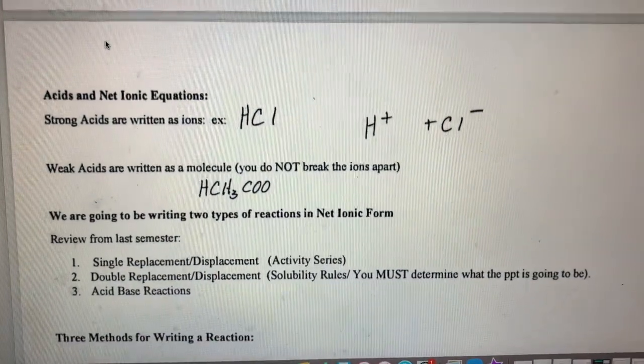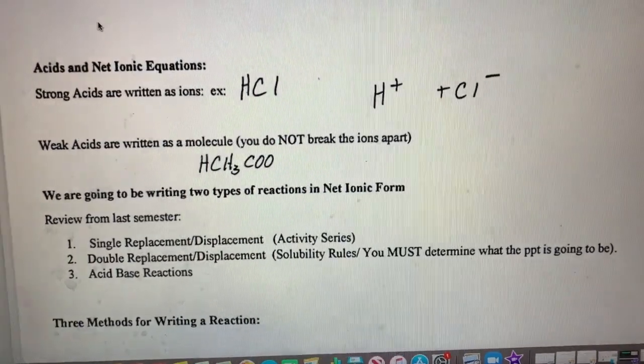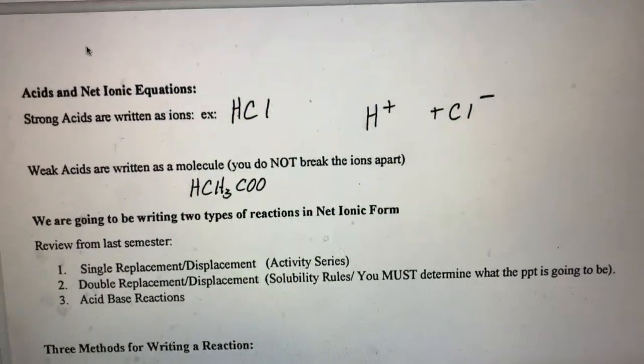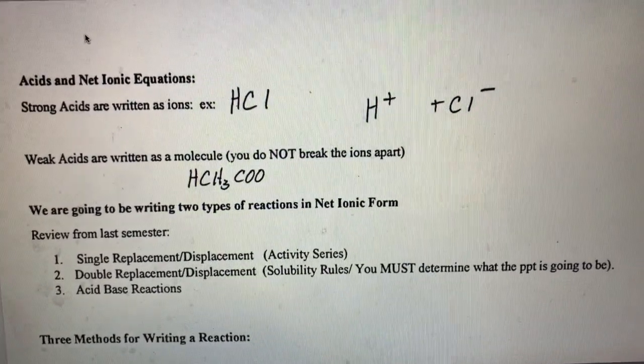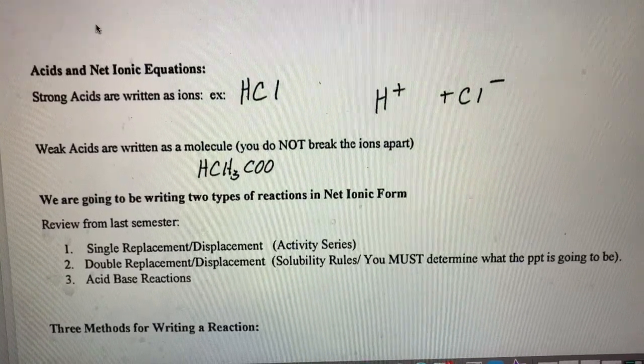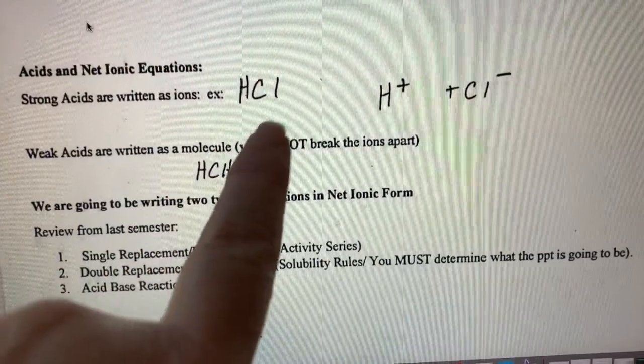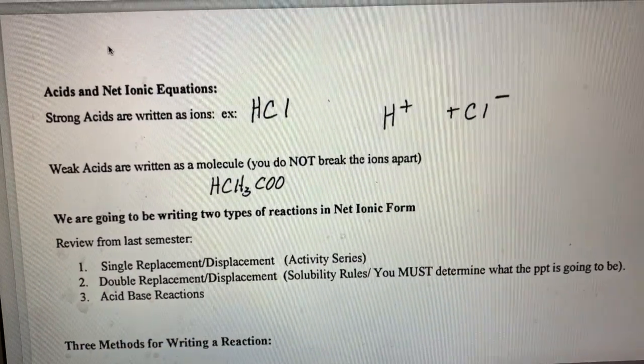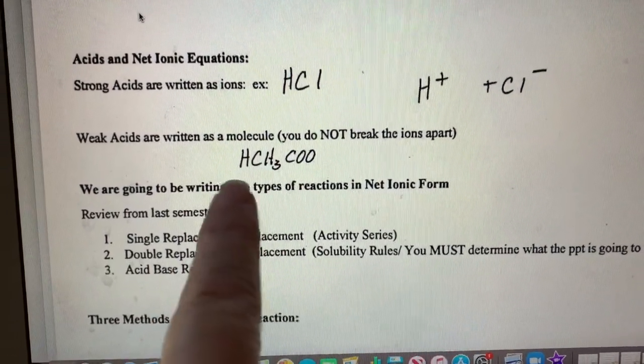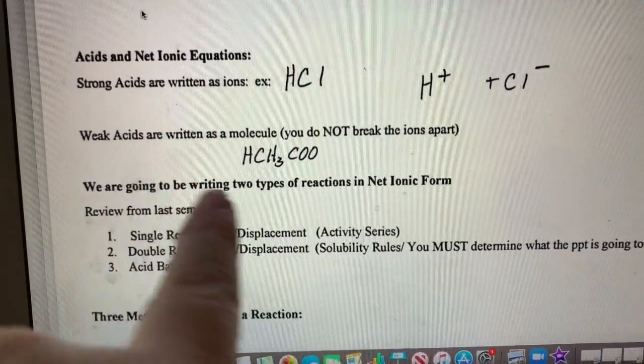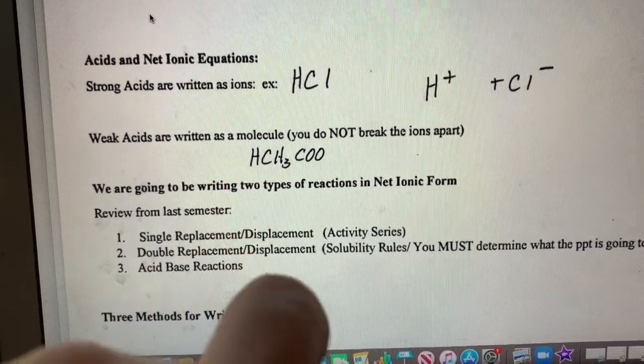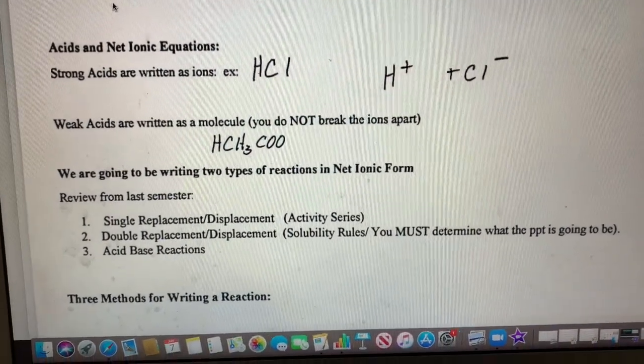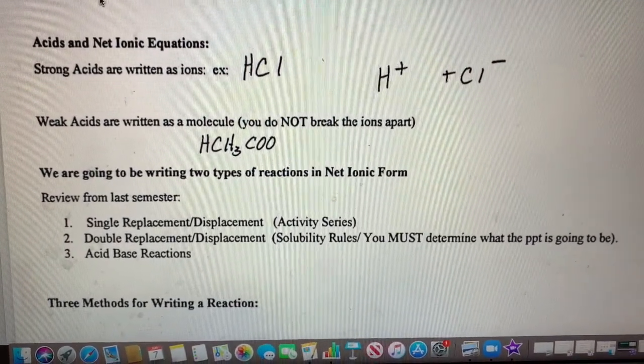Some other things to keep in mind. We're not going to talk a lot about this for us this year, but if you're going on to take AP especially: when writing net ionic equations and dealing with acids, strong acids you treat as soluble and they break apart. For example, hydrochloric acid is strong so in a net ionic we would write that as H⁺ and Cl⁻. Whereas a weak acid like acetic acid we actually leave whole because only a small percentage of those hydrogens turn into ions.